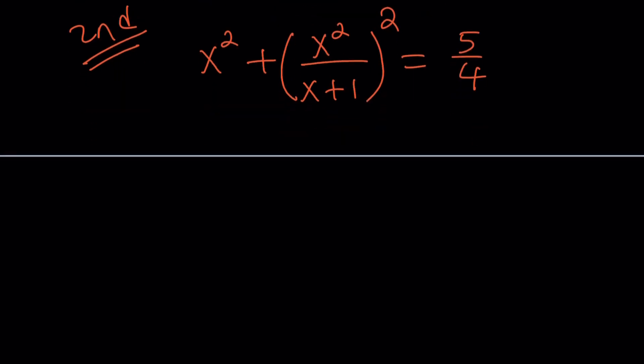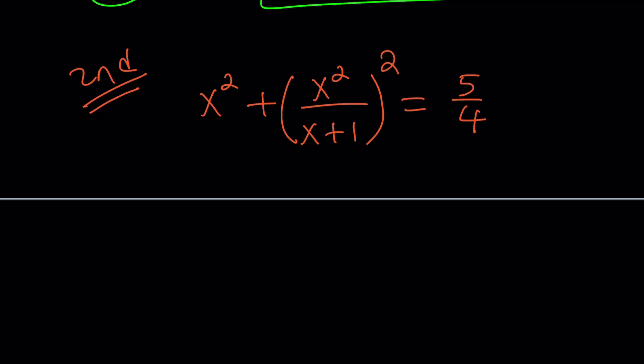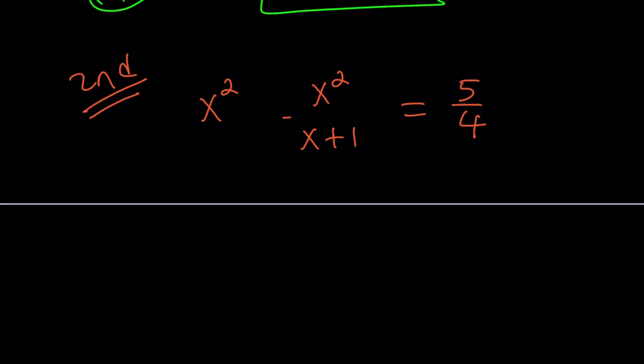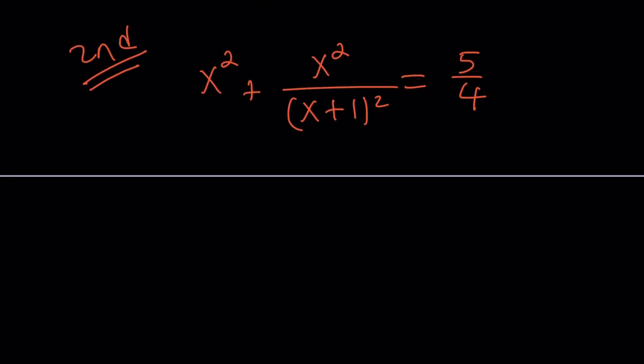We have x squared plus x squared over x plus 1 squared equals 5 fourths. I can think of, I believe, a second method. By the way, I messed up. It's not supposed to be like that. It's supposed to be x squared and x plus 1 squared are separate, like this. In other words, I can basically write this as x squared plus x over x plus 1 squared, right? It equals 5 fourths.